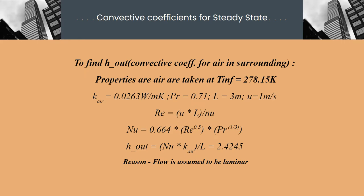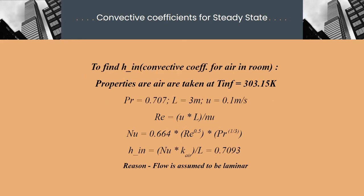We have assumed laminar flow of air inside the room and in surrounding. And therefore, use proper Nusselt number correlation to find h_out and h_in by taking properties of air at temperature 278.15 and temperature 303.15 Kelvin respectively.